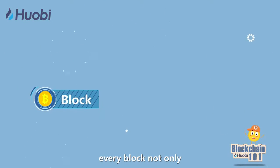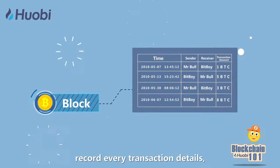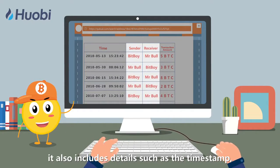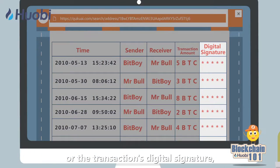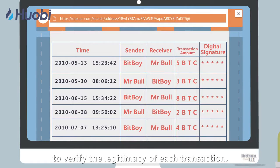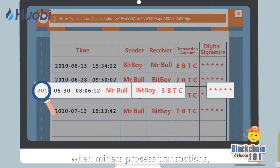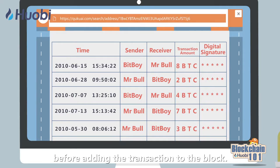Currently, every block not only records every transaction's details, it also includes details such as the timestamp, Bitcoins transferred, or the transaction's digital signature to verify the legitimacy of each transaction. Digital signatures are required for verification when miners process transactions, before adding the transaction to the block.